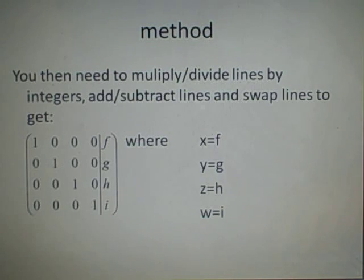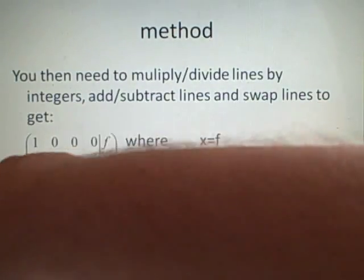What we want to do after we've set it out in this form is we want to multiply or divide lines by values. We can also add and subtract different lines to each other, and we can also swap lines. So if a line is in the second place, we can put it in the first place.